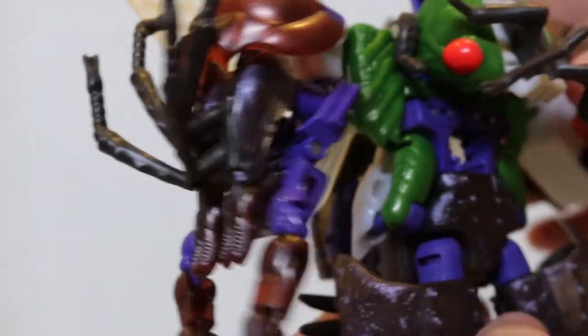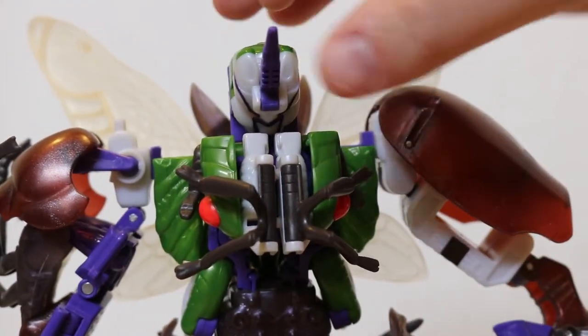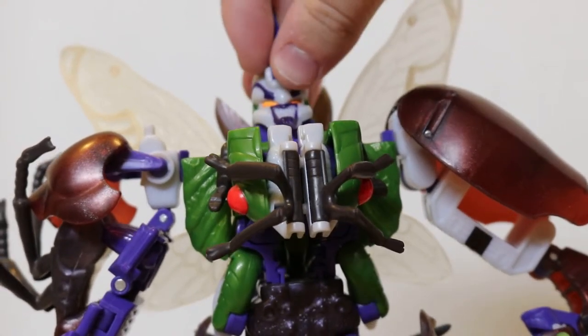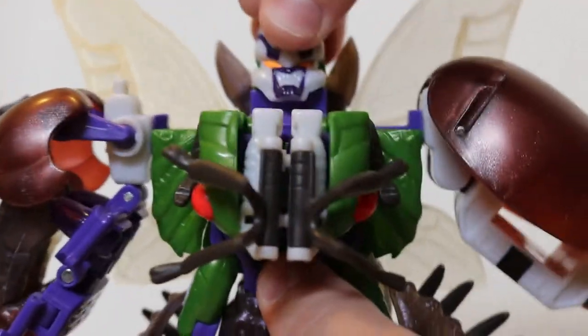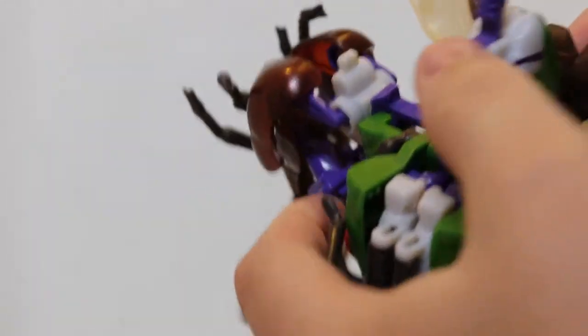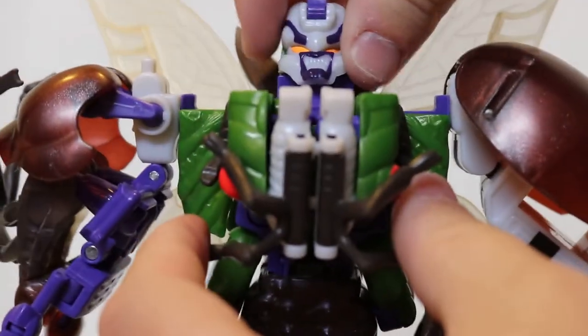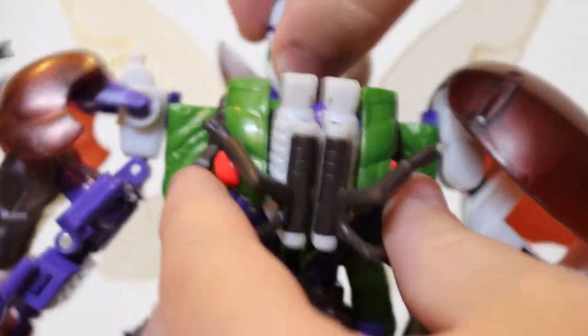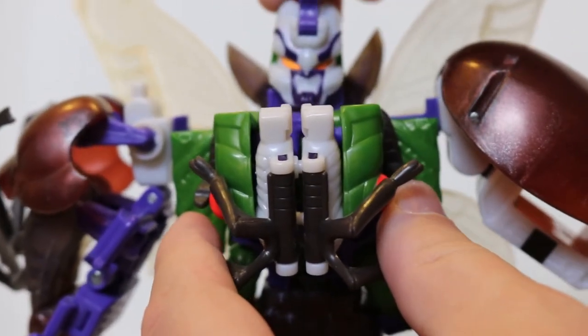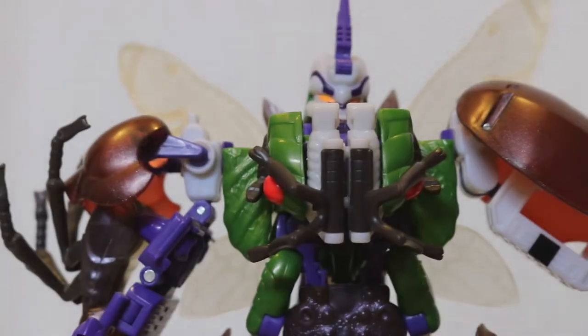Turning him around, you now see the head. And the head locks into position here. There we go. It's in position. And then you can free it up so that he can now move his head. Tripredicus is now combined.